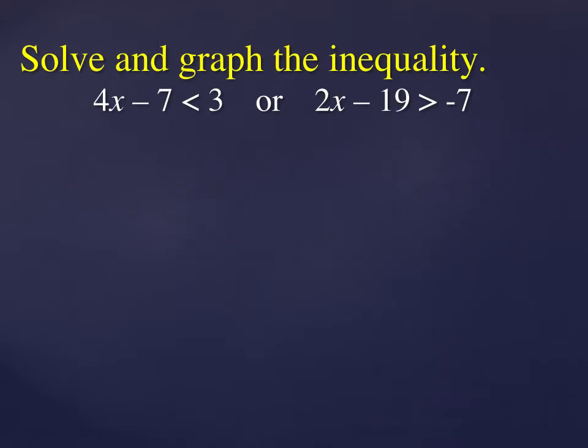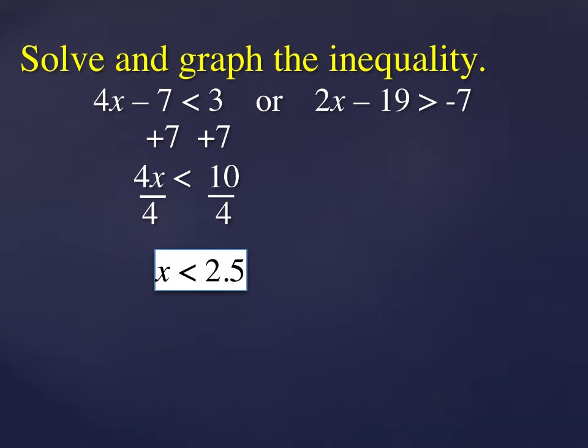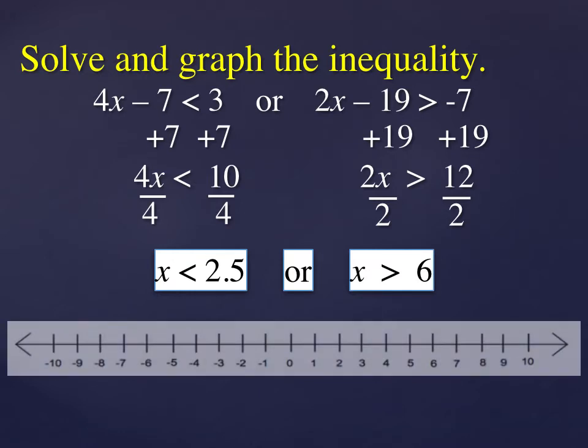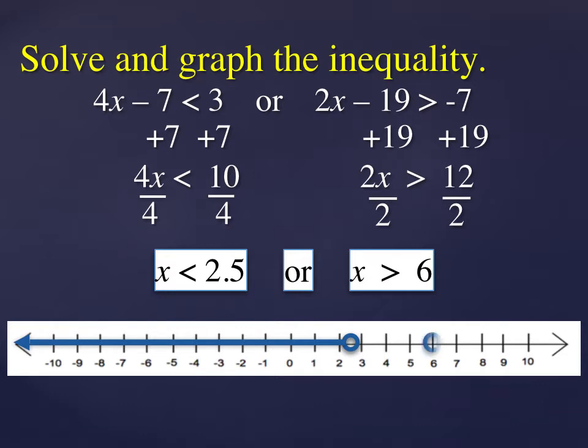Now I have one for you to try. You can put the video on pause. You can give it a try and let's compare. So I started with the inequality on the left and I'm isolating the variable X and I get X is less than 2.5. Or now I'm solving the inequality on the right and I get X is greater than 6. So the graph has two pieces and they do not include the endpoints because it is not less than or equal to and greater than or equal to.